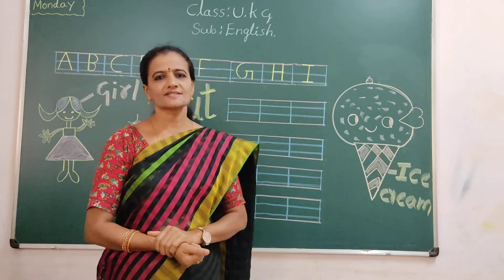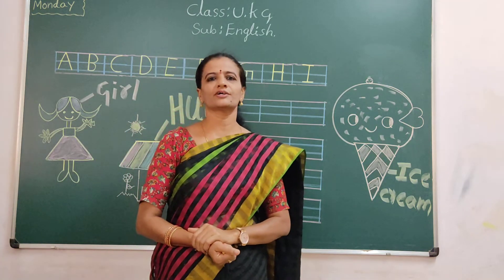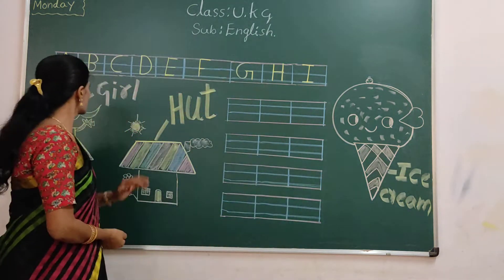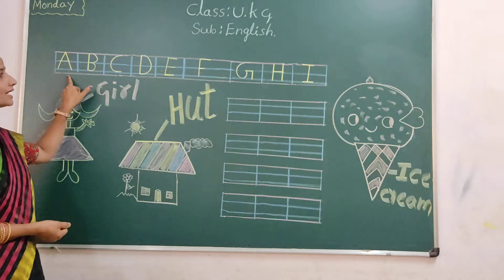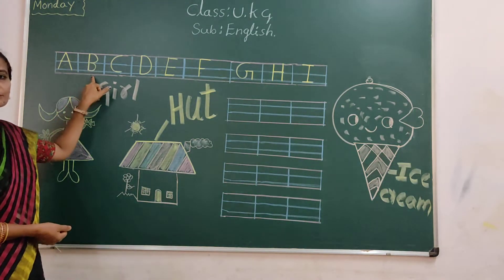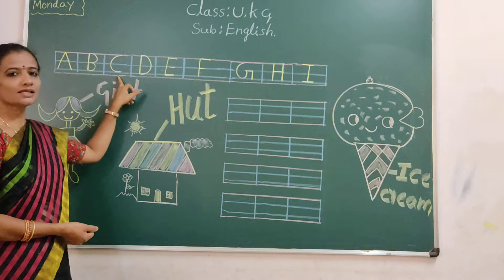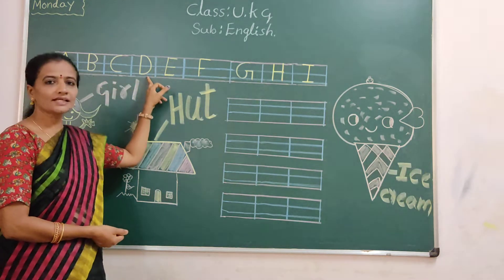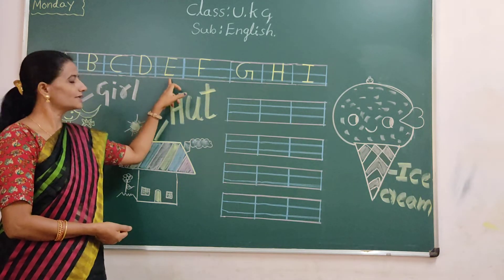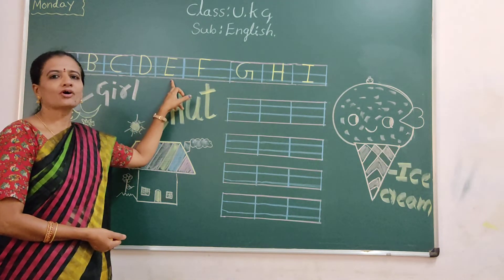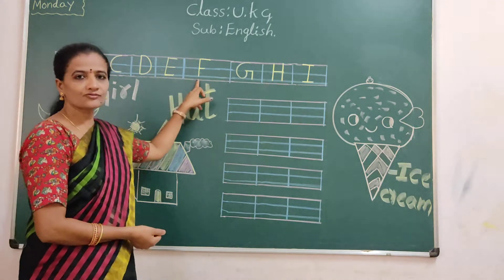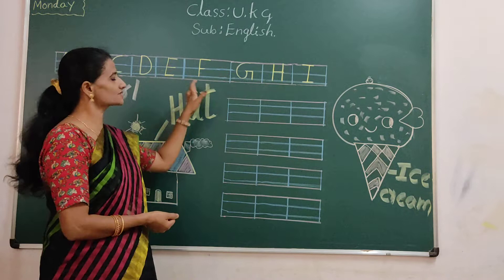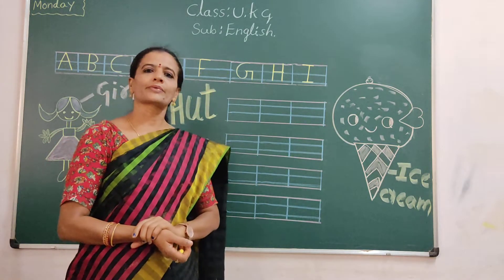Children, in previous class, which letter we practiced? In previous class: A, A for apple. B, B for ball. C, C for cat. D, D for doll. E, E for elephant. F, F for fish. So 6 letters in previous class we practiced.